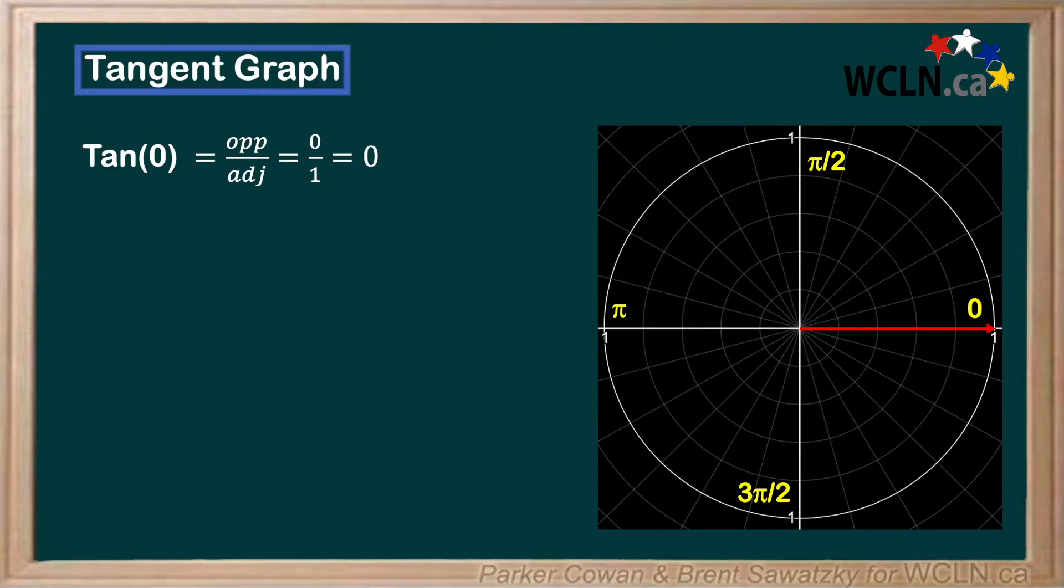Next, we have tan of pi over 2, which places our terminal arm here. When we form a triangle in this position, we see the adjacent side go to 0, and the opposite side is equal to the hypotenuse, which is 1. This situation is not so simple. Since tangent always equals opposite over adjacent, and our adjacent side is 0, we end up with an imaginary number, since we're dividing by 0. In other words, this point does not exist. We can call this undefined.